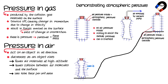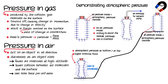it gets crushed. This is because the atmospheric pressure at the bottom of the mountain is greater than at the top, resulting in a higher external force compared to the internal pressure inside the can.